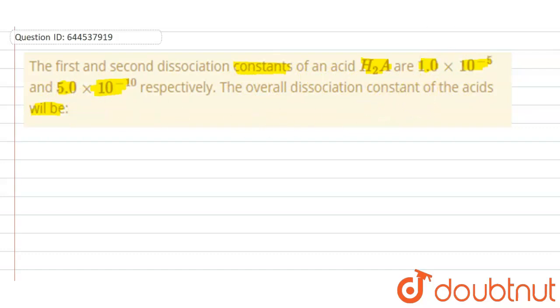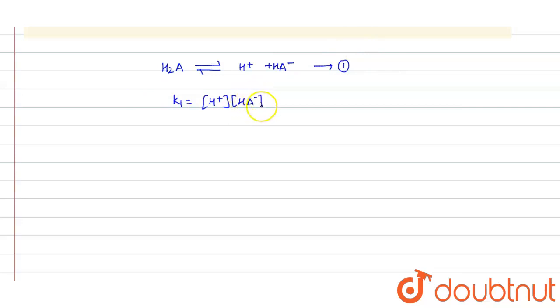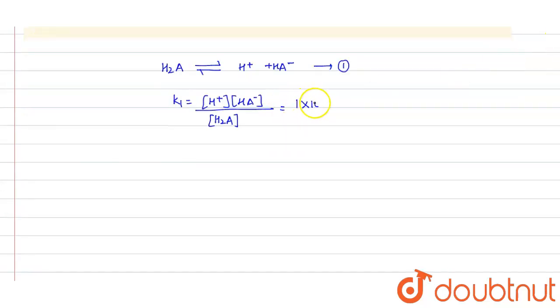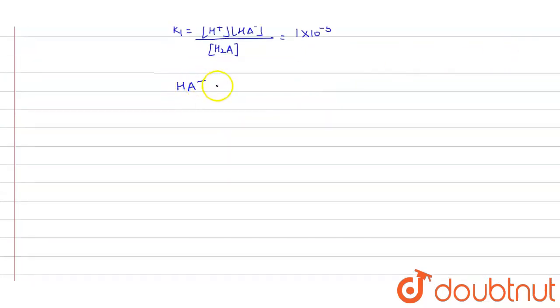First of all, see how we will solve this question. H₂A will dissociate into H⁺ and HA⁻. This is equation 1, and for this we can write: K1 equals H⁺ concentration times HA⁻ concentration divided by H₂A concentration. Its value given in the question is 1×10⁻⁵.